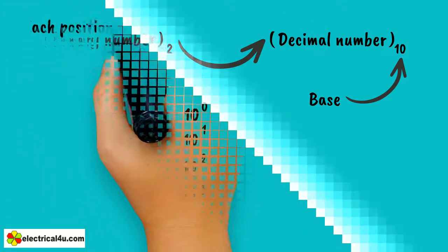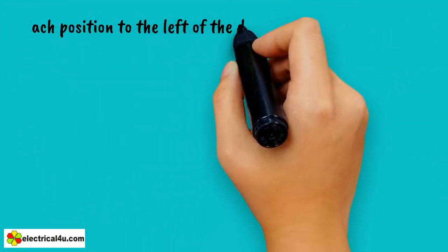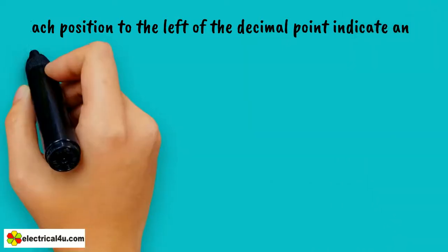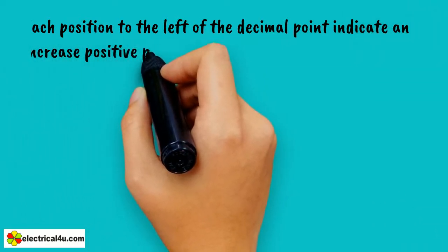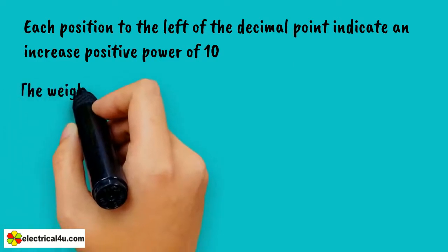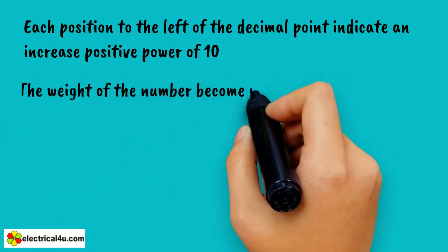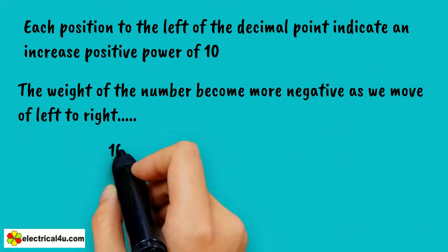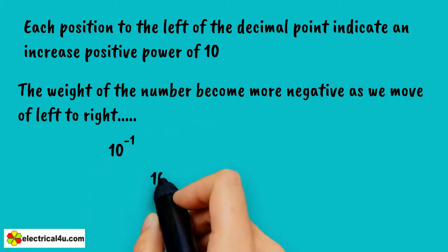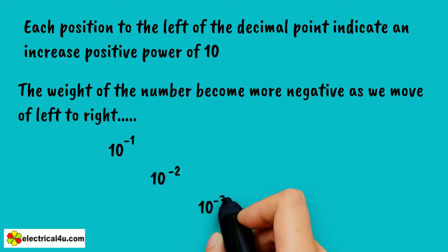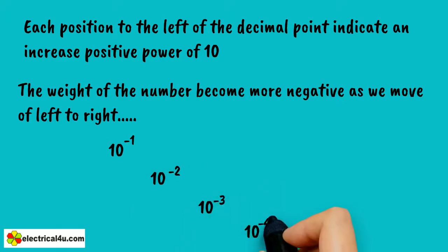We can clearly notice that each position to the left of the decimal point indicates an increased positive power of 10. In the same way, for the fraction numbers, the weight of the number becomes more negative as we move from left to right — as 10 to the power minus 1, 10 to the power minus 2, 10 to the power minus 3, 10 to the power minus 4, etc.